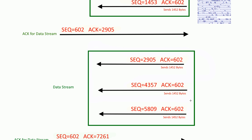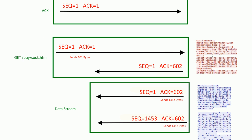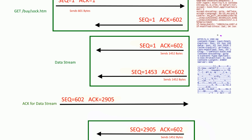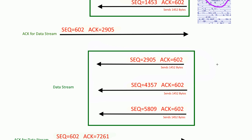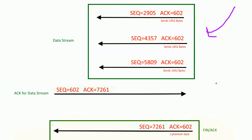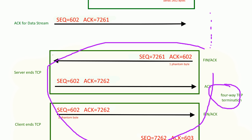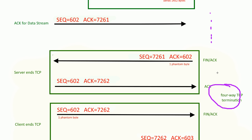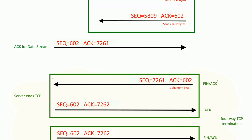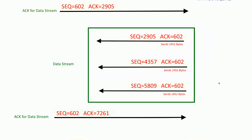So to recap: three-way handshake, GET request, received some data back, increased the window size because the connection was good, and then we ended the TCP session. There was actually a lot more data in between — I manually shortened the flowchart to show you what the TCP session termination looks like.